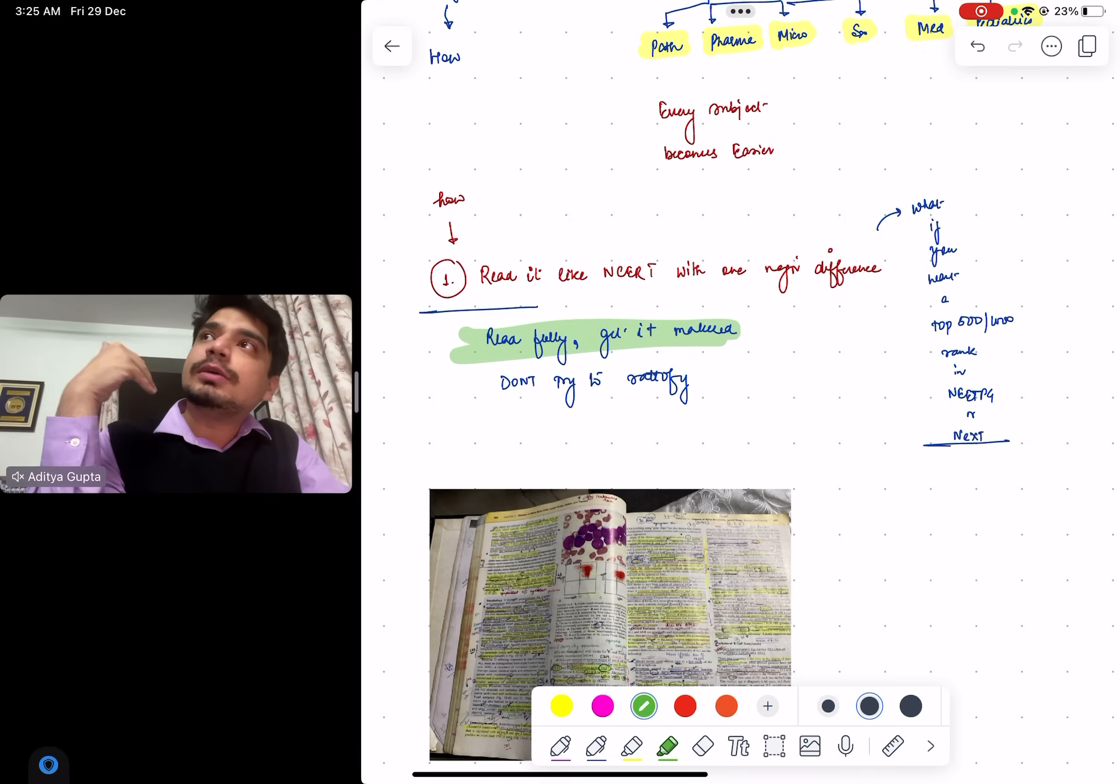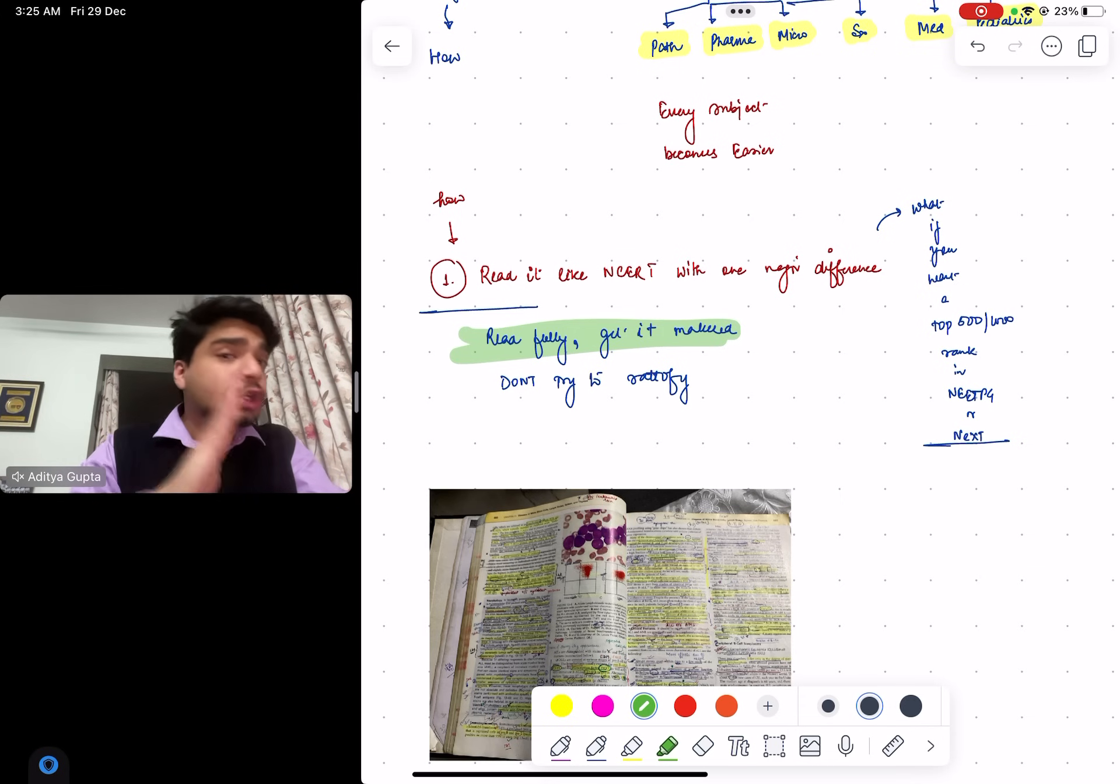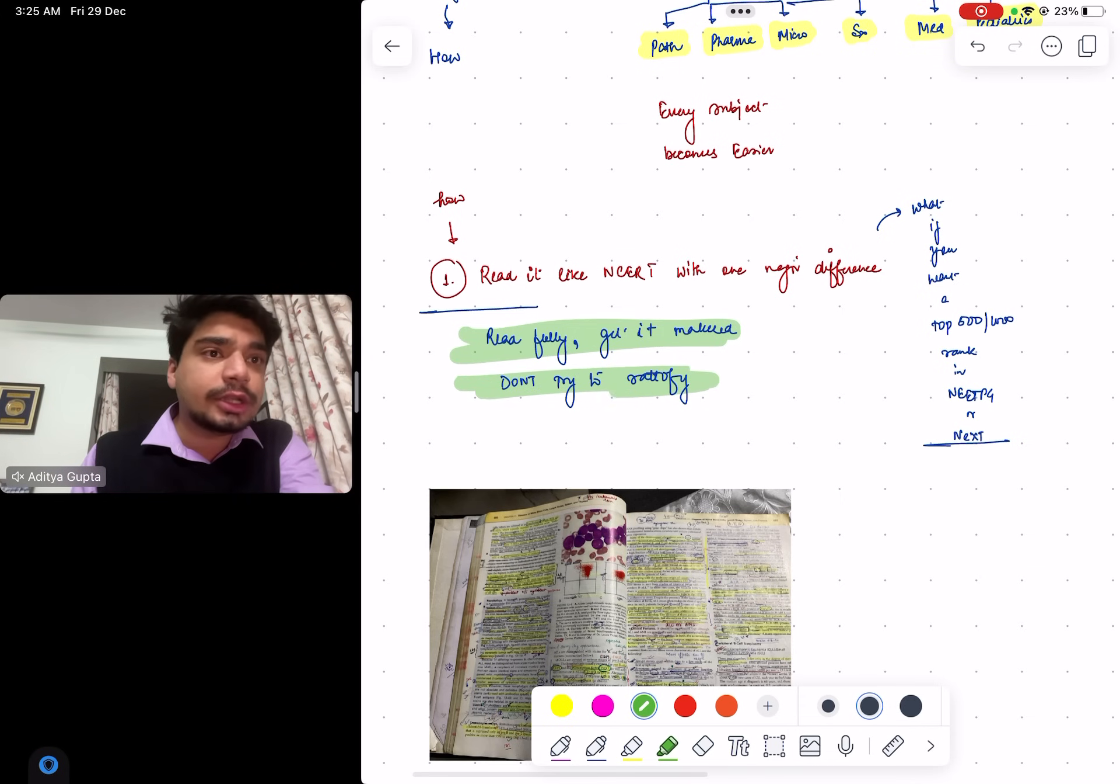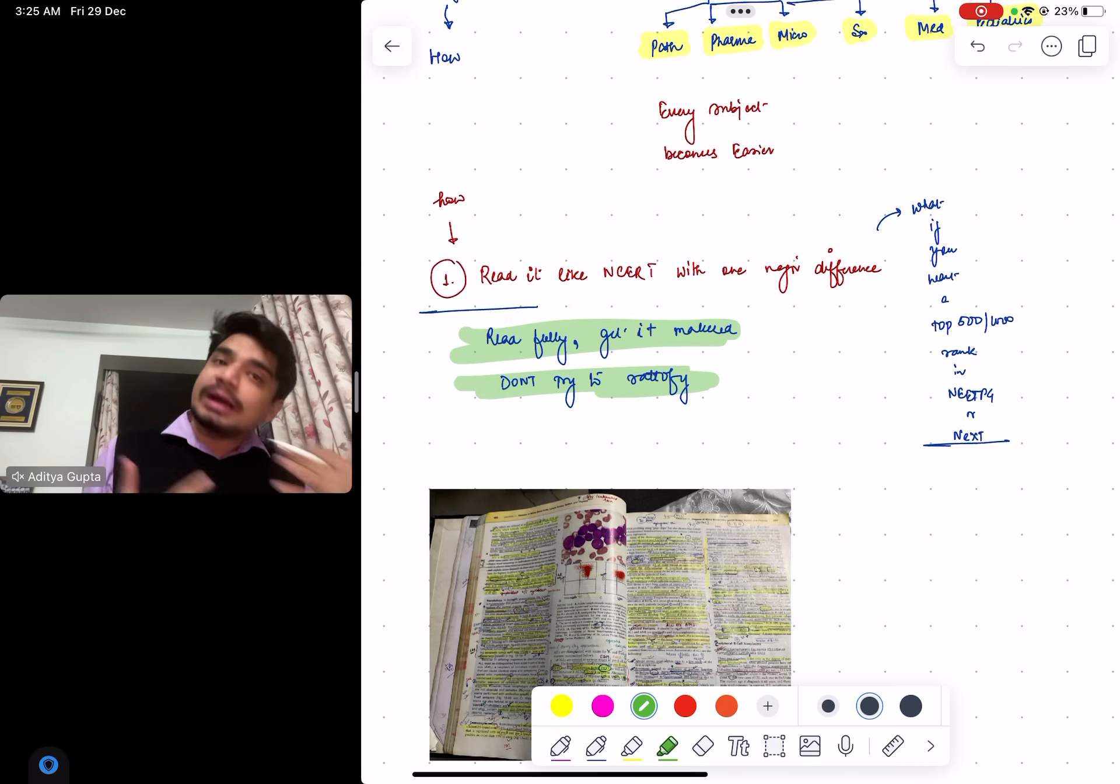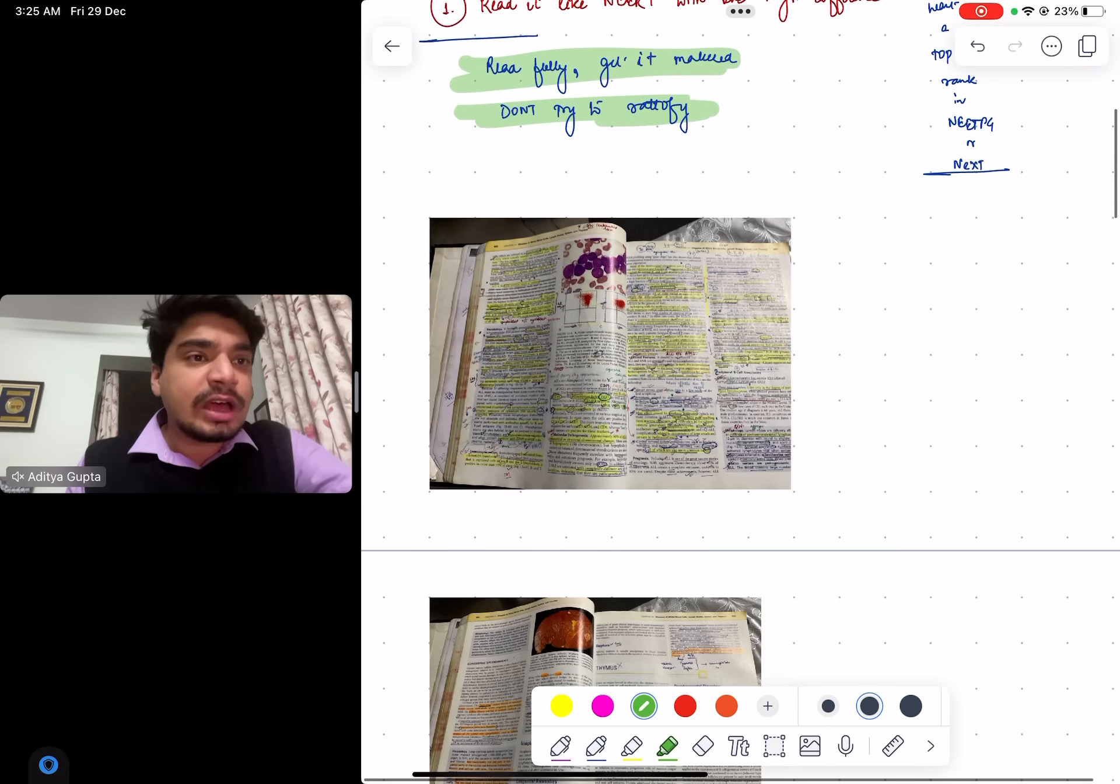I'm telling you read it like NCERT, I'm not telling you to remember it like NCERT. You have to read it fully, but get it marked. Get it marked by a senior who has given the exam to know which are the important SAQs, which are the important previous questions for your theory exam, from your second prof point of view, from professional exam point of view. Read it multiple times, no doubt about that, but don't try to ratify everything. You have to make notes.